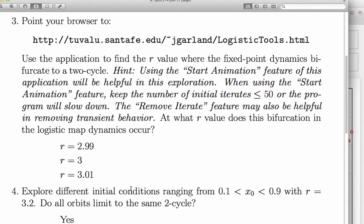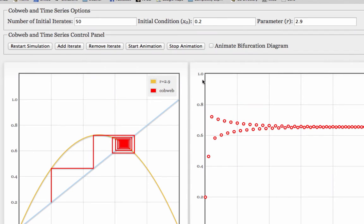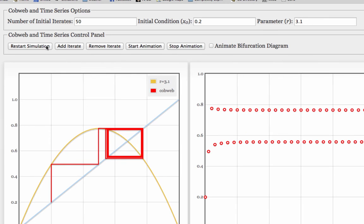And for that, you need to do a bunch of experiments with the app. Here's r equals 2.9. So I would definitely say this is still fixed point dynamics. Here's r equals 3.1. I would definitely say that's two-cycle dynamics. So someplace between 2.9 and 3.1, there's a bifurcation.